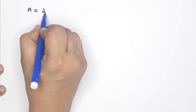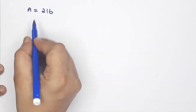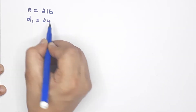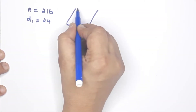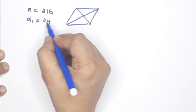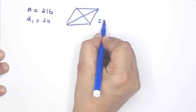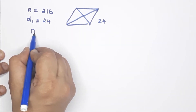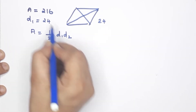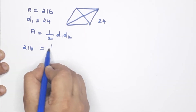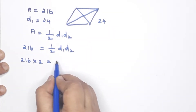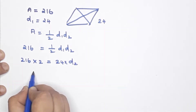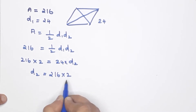The area of the rhombus is equal to 216 square centimeters. The length of one diagonal is 24 centimeters. We need to find the length of the other diagonal. The formula is: area = half D1 × D2. So, 216 = ½ × D1 × D2. D1 is 24, so D2 = (216 × 2) / 24.